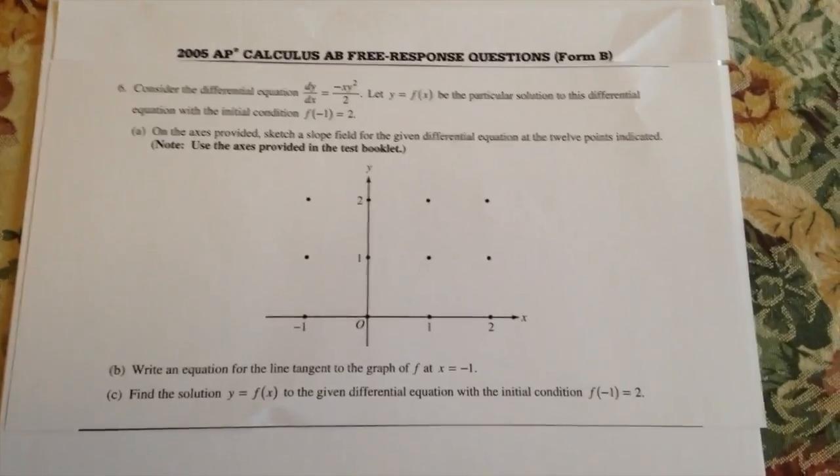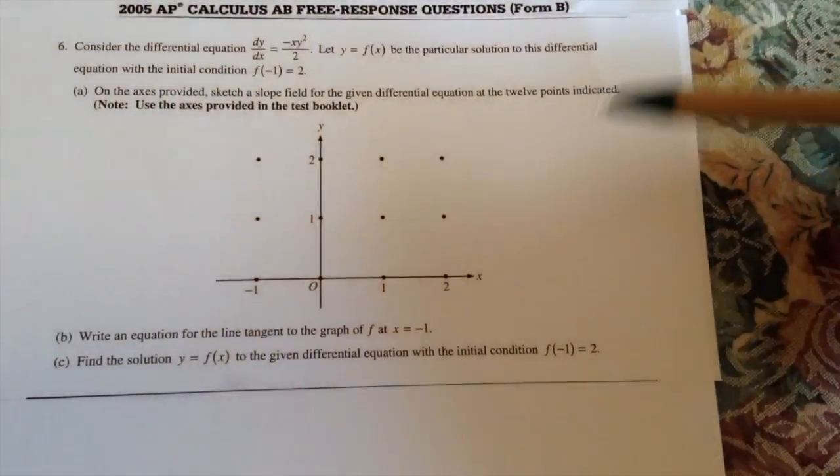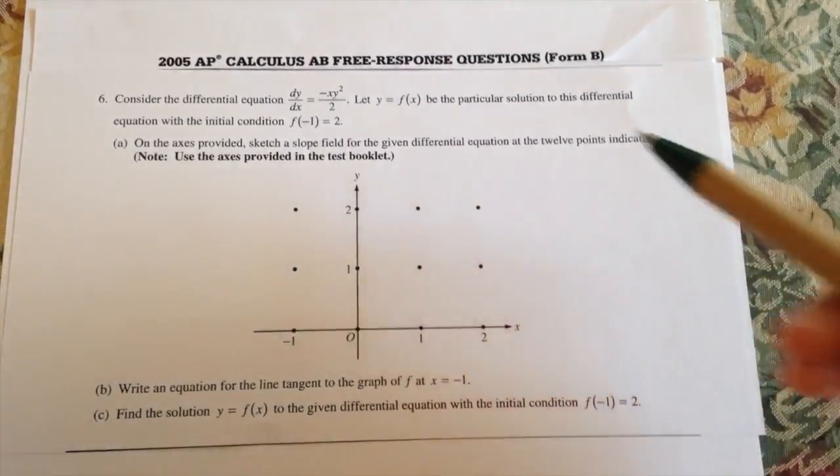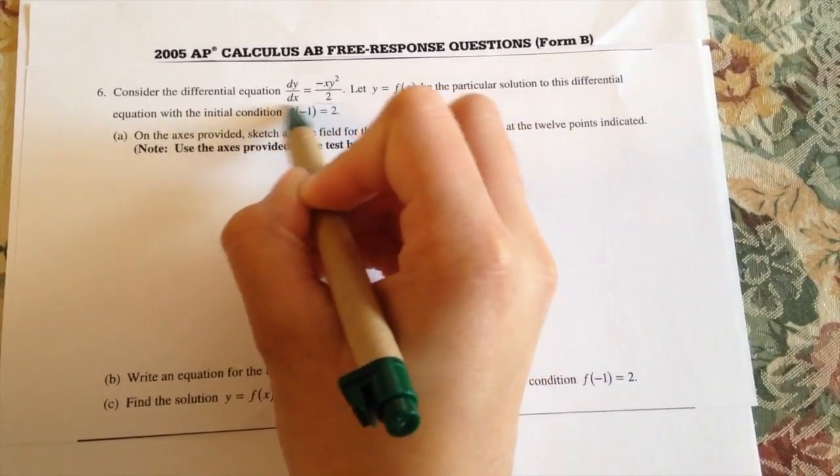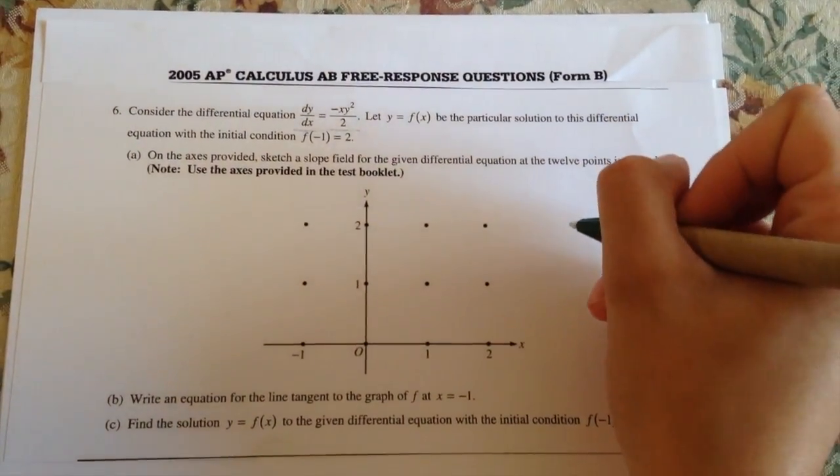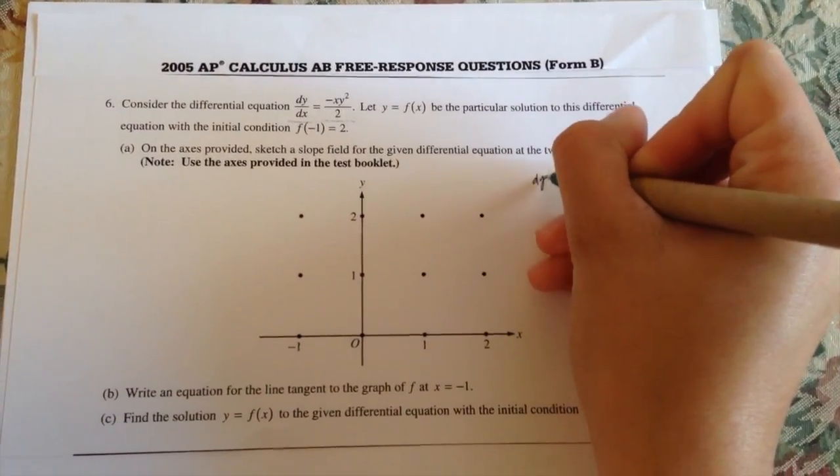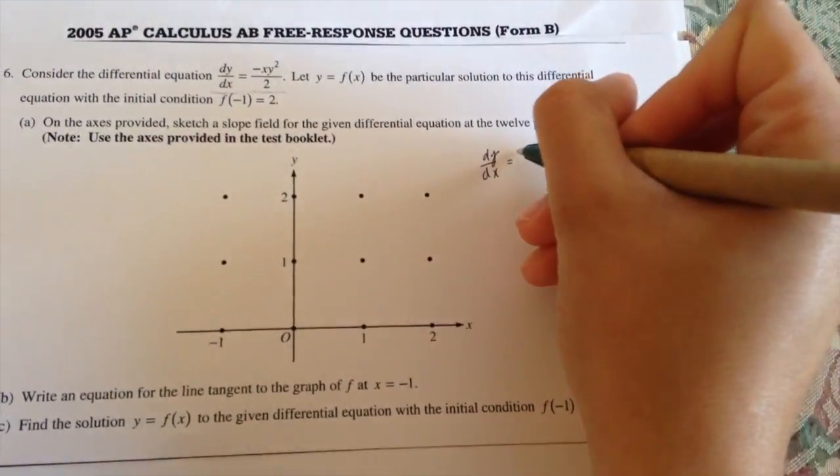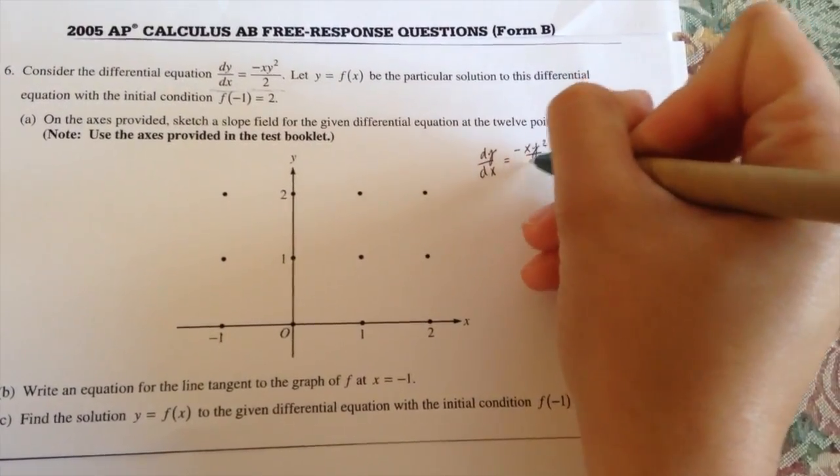So part A asks to sketch a slope field for the differential equation at the 12 points. So all we do is use this equation and plug in the points that are given. So we use dy over dx equals negative xy squared over 2.